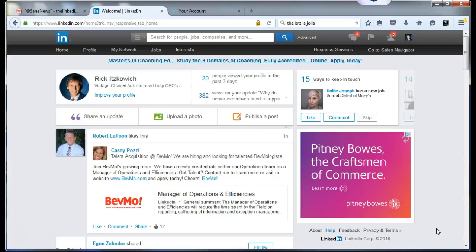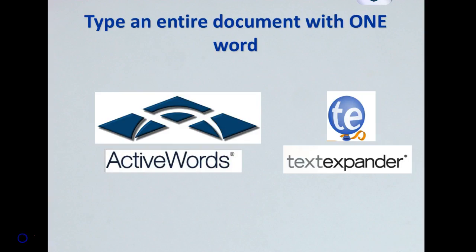Let me talk about these two tools. One is for Windows, the other one is for Mac. The two tools are Active Words and Text Expander. Active Words is for Windows and Text Expander is for Mac. These tools allow you to type an entire document with just one word.